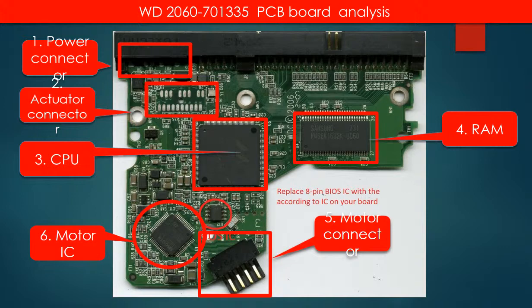The first red box is the power connector. The second red box is the actuator contact. The actuator is the component inside the hard drive that controls the hard drive disk head to read and write the disk. The third box is the main IC, also called CPU. The fourth is the RAM chip, used by the main chip. The fifth is the motor connector. The sixth is the motor IC — this small IC drives the hard drive motor to spin up the disks.